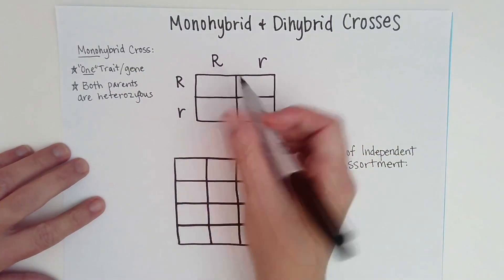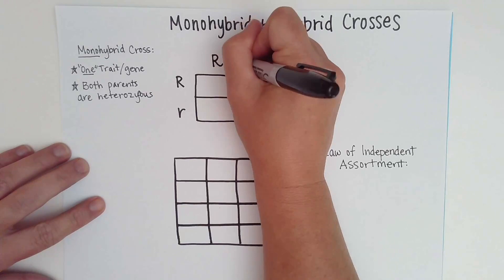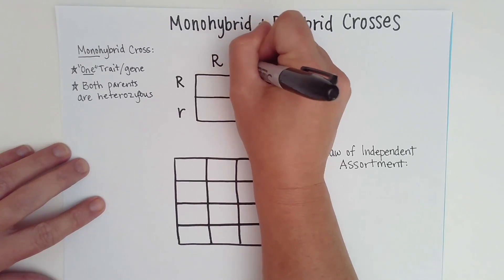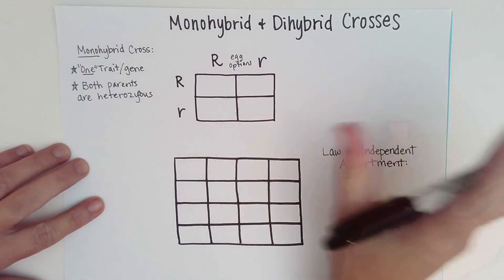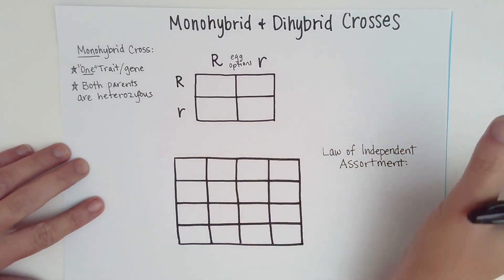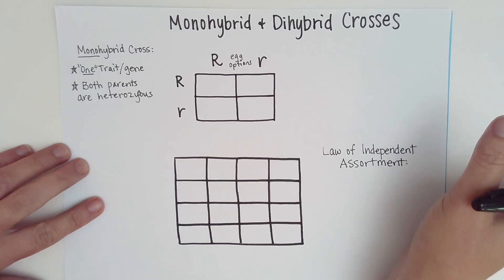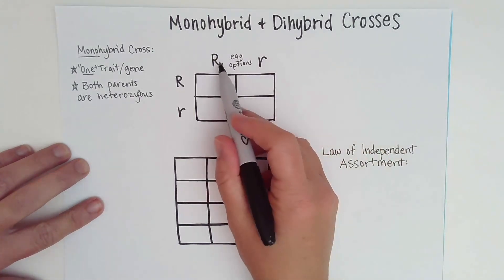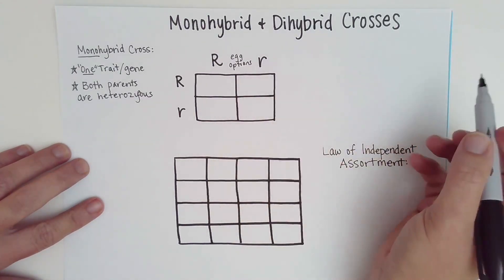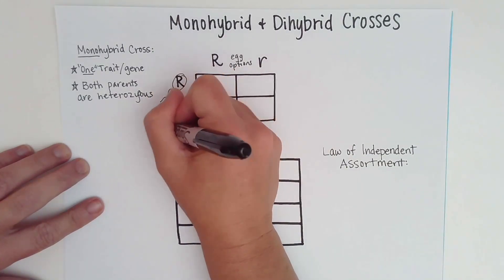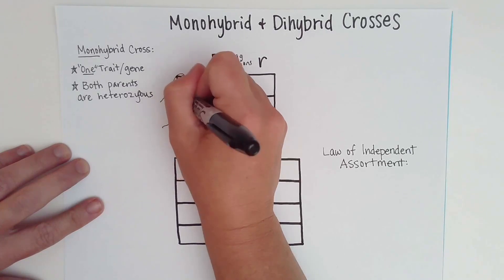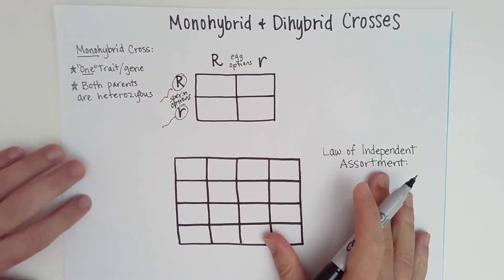You can see that these are the egg options from the female — the female could put in a big R or a little R, but not both. According to the law of segregation we discussed in part two, each egg only gets one of these alleles. Similarly, each sperm only gets one — so the sperm options would be big R and little R as well.